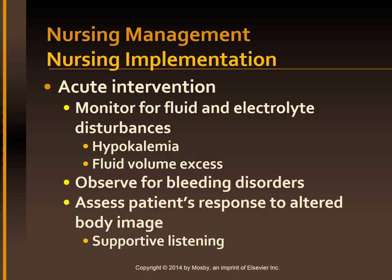Water excess is manifested by muscle cramping, weakness, lethargy, and confusion. Observe for and provide nursing care for any hematologic problems like bleeding tendencies, anemia, and increased susceptibility to infection. Assess the patient's response to altered body image resulting from jaundice, spider angiomas, palmar erythema, ascites, and gynecomastia. The patient may experience anxiety and embarrassment about these changes; explain these phenomena, be a supportive listener, and provide nursing care with concern and warmth to help the patient maintain self-esteem.